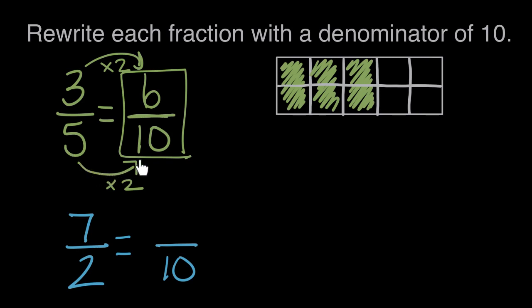To get from fifths to tenths, we had to double or multiply by two. To get from halves to tenths, we'd have to multiply each of our pieces times five. Each of our halves would be split into five pieces. So we'd multiply two times five to get tenths.